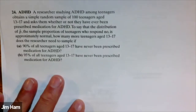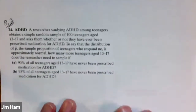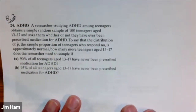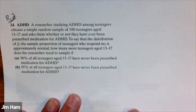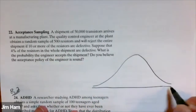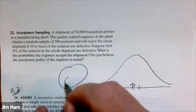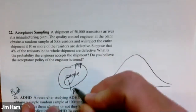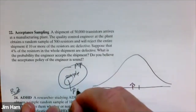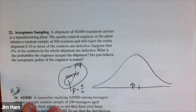Problem number 24 is from section 8.2. In order to have a proportion situation, we're going to be considering this sampling distribution. Every time we draw a sample from the population, we can calculate a p-hat. The formula for p-hat is we take the number of successes and divide by n.